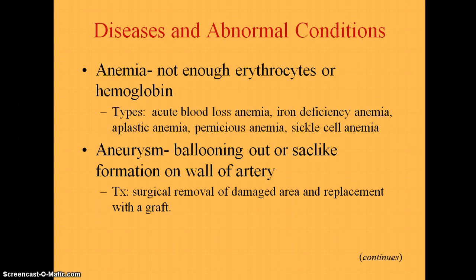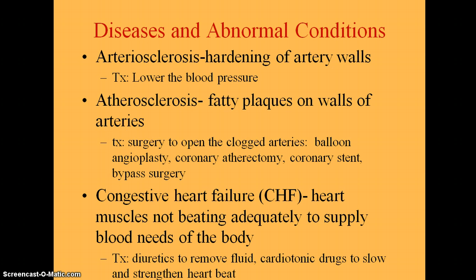An aneurysm is where the wall of a blood vessel is weak and it balloons out, forming a sac on the wall of the artery. It's dangerous because it could weaken and then rupture, causing a lot of pain and bleeding. Especially if the hemorrhage is in the brain or abdomen, it might cause death. Treatment is to remove the damaged area and replace it with a graft or another blood vessel.